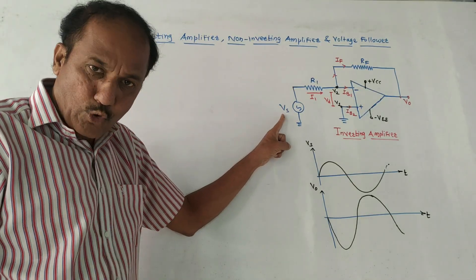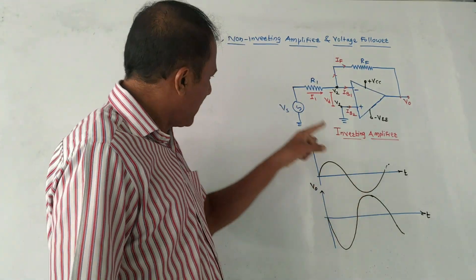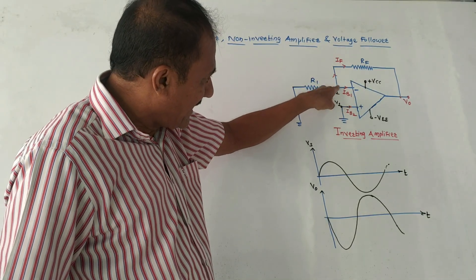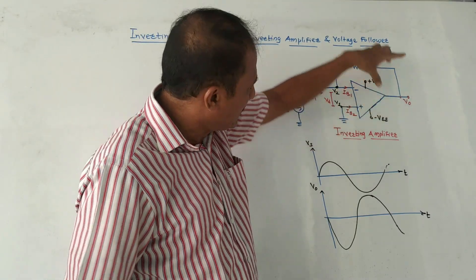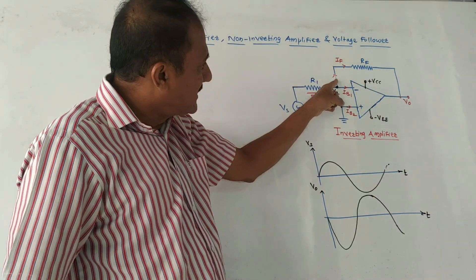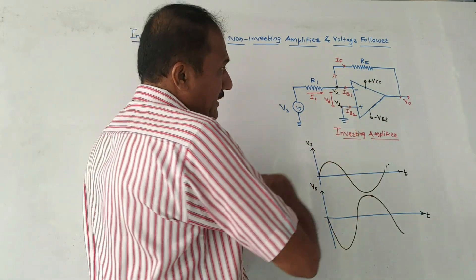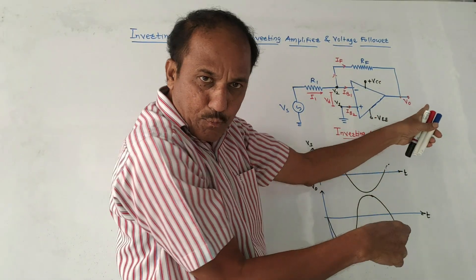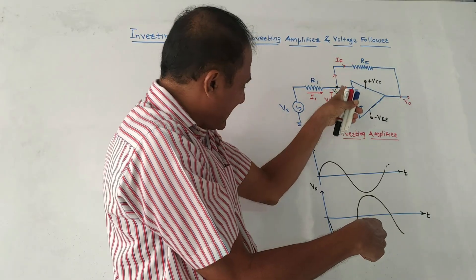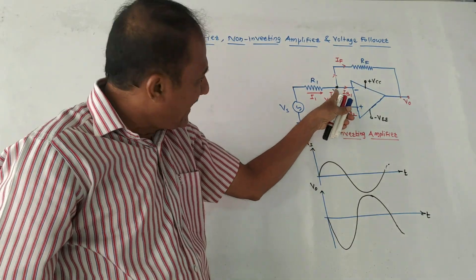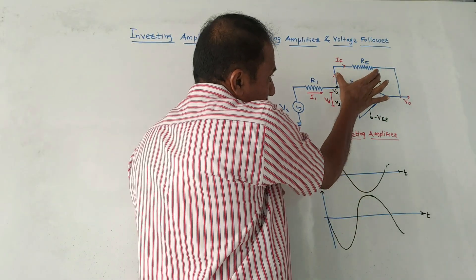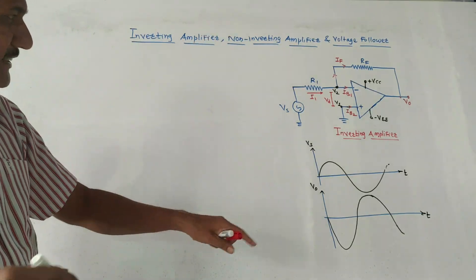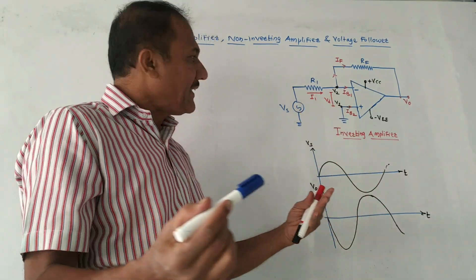In the inverting amplifier, input voltage Vs is applied to the inverting, that is the negative terminal. One connection is taken from here and connected at the output side — this resistance is Rf, called the feedback resistance. Rf is connected between the output voltage V0 and the negative terminal of the op-amp, providing negative feedback. From an exam perspective, you may be asked to derive the expression of gain for the inverting amplifier configuration.